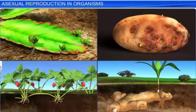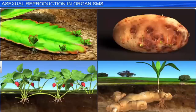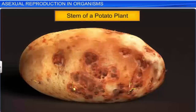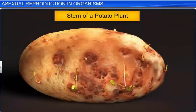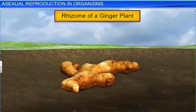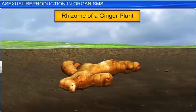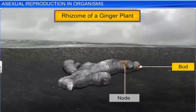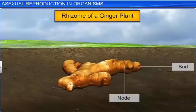In higher plants, asexual reproduction, commonly known as vegetative propagation, takes place through vegetative propagules — specialized structures which emerge from different parts of the plant. For instance, the stem of a potato plant is dotted with buds known as eyes, which later germinate into new plants. Whereas in a ginger plant, modified stems or rhizomes having nodes and buds act as a means of vegetative propagation.